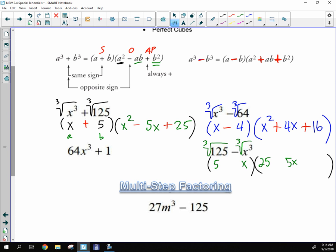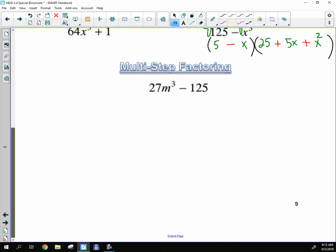Now, multi-step just means that when we try to cube root it, it doesn't work. So the 27, actually, let's see, does this one work? 27, yeah, this one actually does work. This is not a good example of multi-step factoring. So 27 is 3, and then you have m, and then 125 is 5. Yeah, that's a horrible example. So what I was looking for was a GCF, but that one didn't have one.